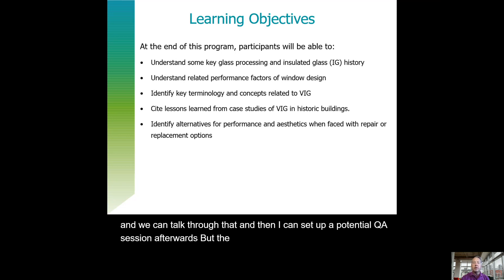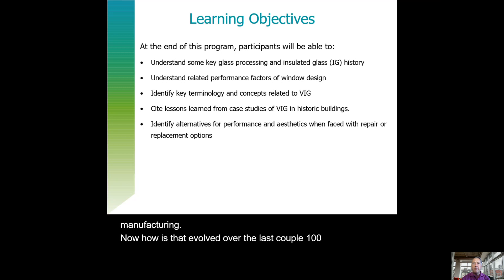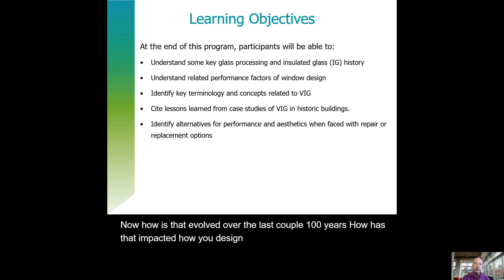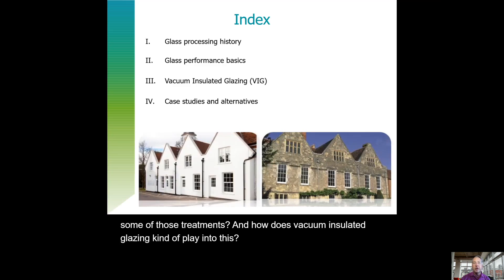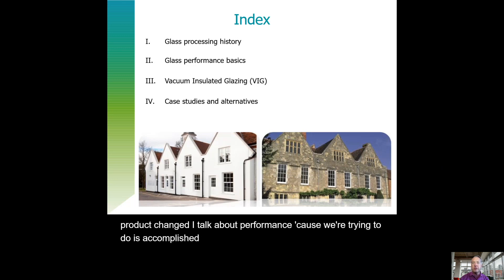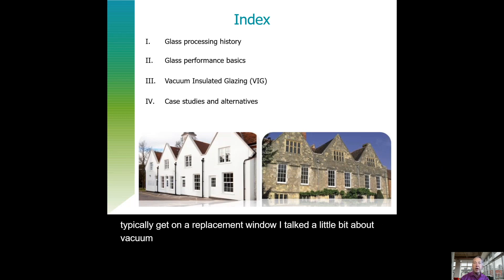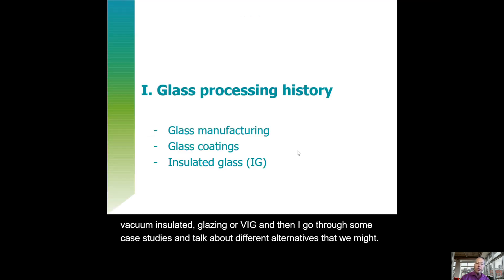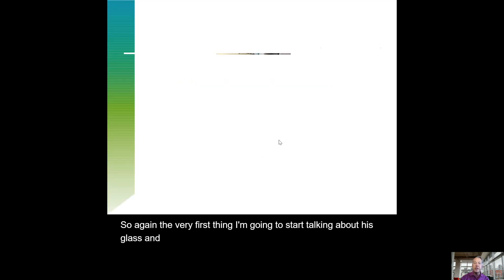The whole point of this program is to talk about the history of glass and window manufacturing — how that has evolved over the last couple hundred years, how that has impacted window design, and what some of those treatments are and how vacuum insulated glazing plays into this. I talk about how glass has been made, how coatings have been made, and then how window and IGU or insulated glazing products have changed. I also cover performance, vacuum insulated glazing or VIG, and then go through some case studies.